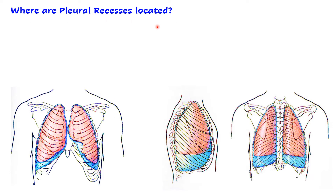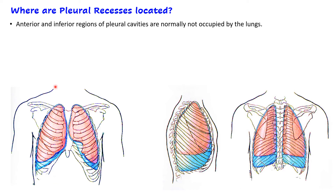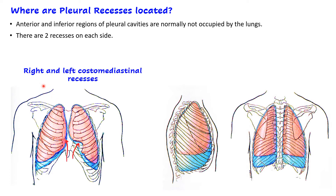The pleural recesses are located along the anterior and inferior regions of the pleural cavity. Along the anterior region we can see one recess, and another one is present along the inferior region. In the lateral view, we can see them along the posterior aspect. So there are two recesses on each side.